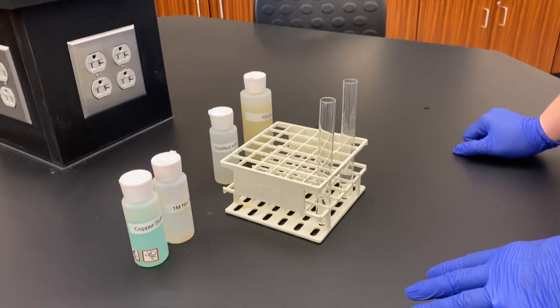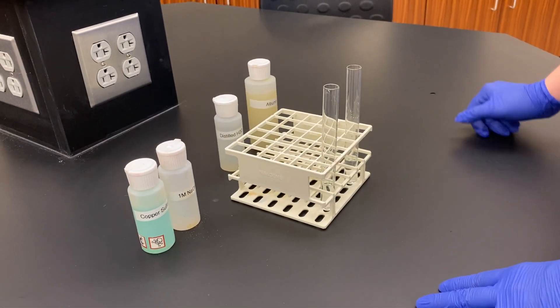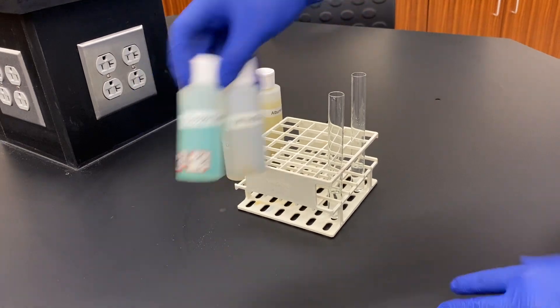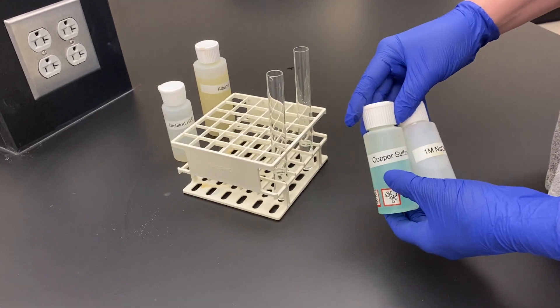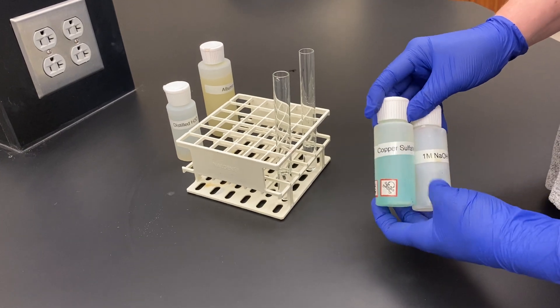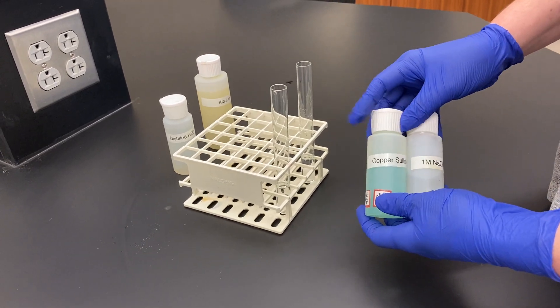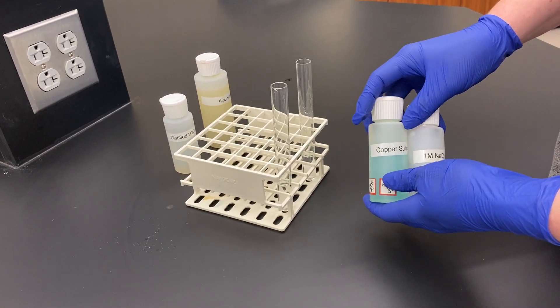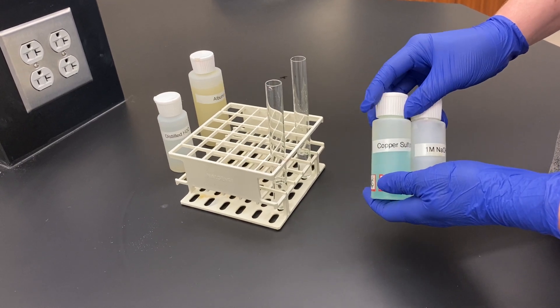In this test, we're going to examine for the presence of proteins. To do that, we're going to use two reagents: copper sulfate and sodium hydroxide. When these two are added together, they will react to form a blue precipitate if there's no proteins.